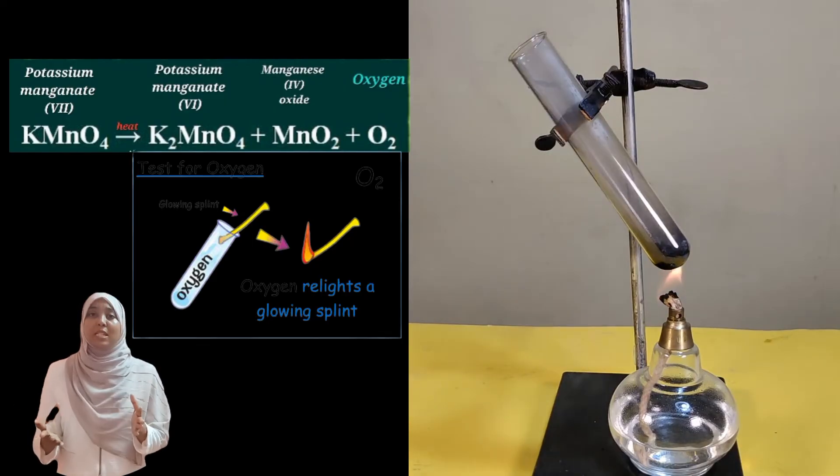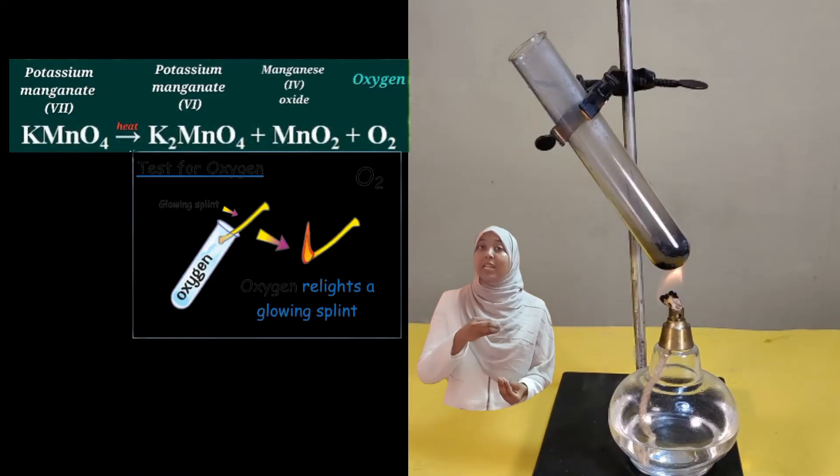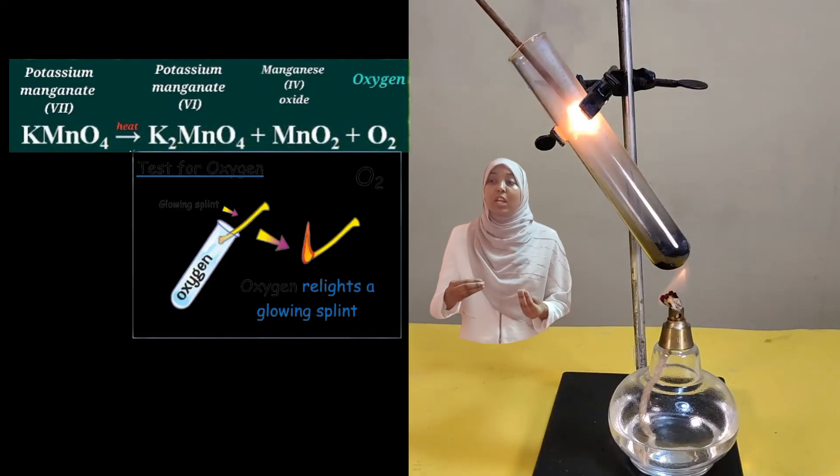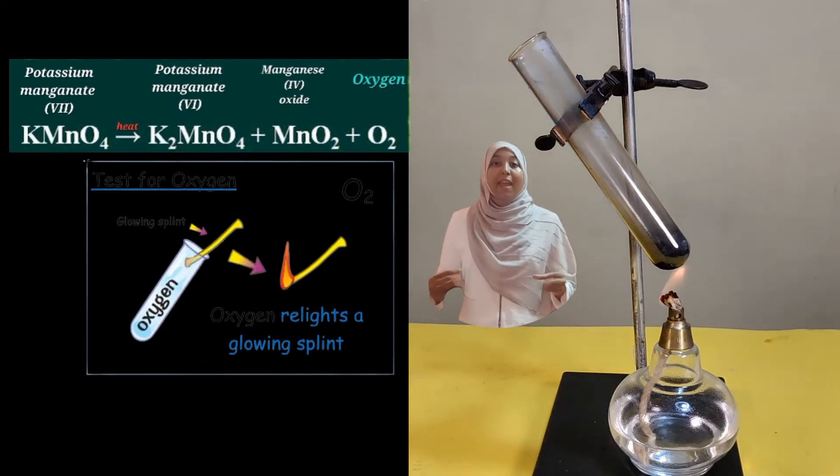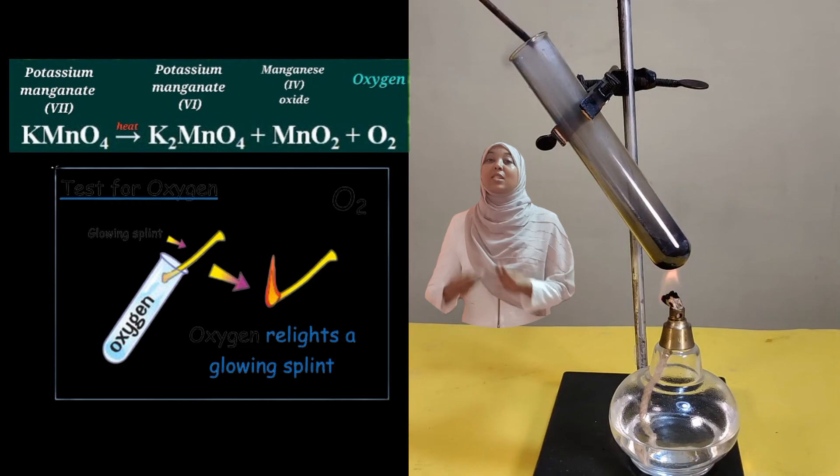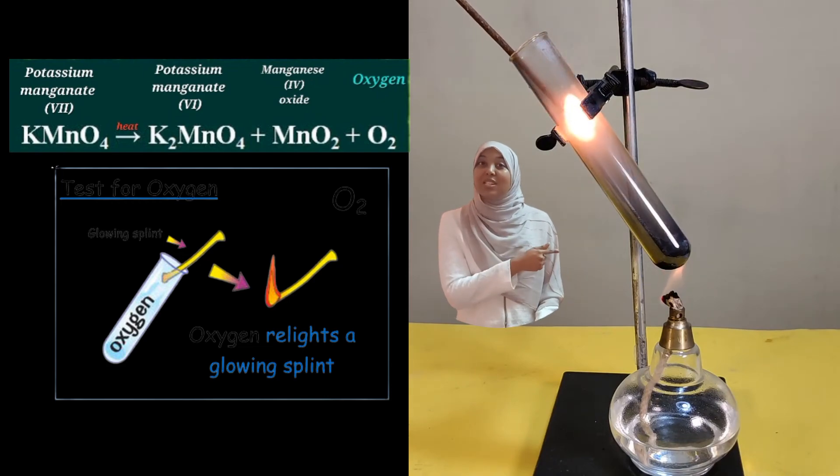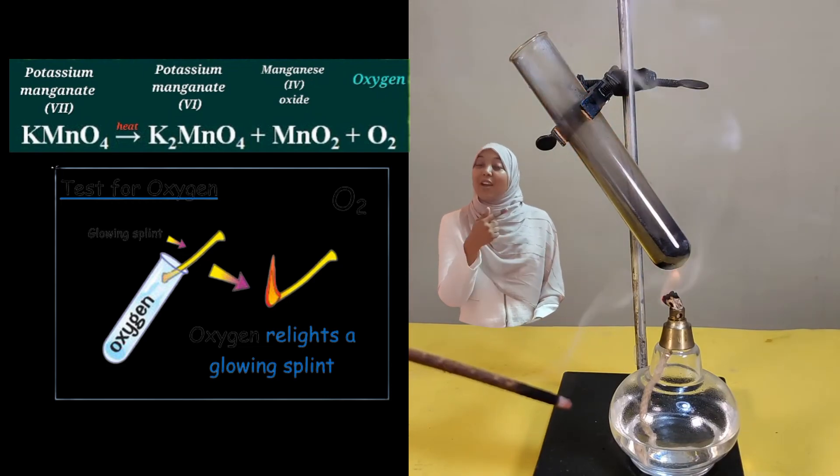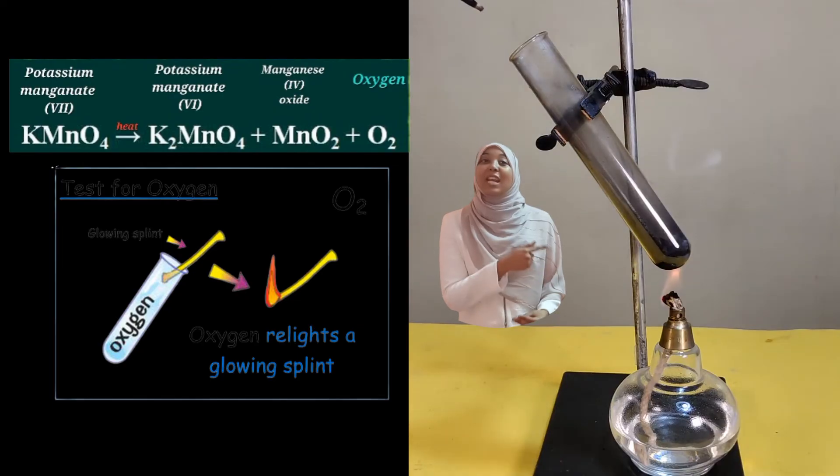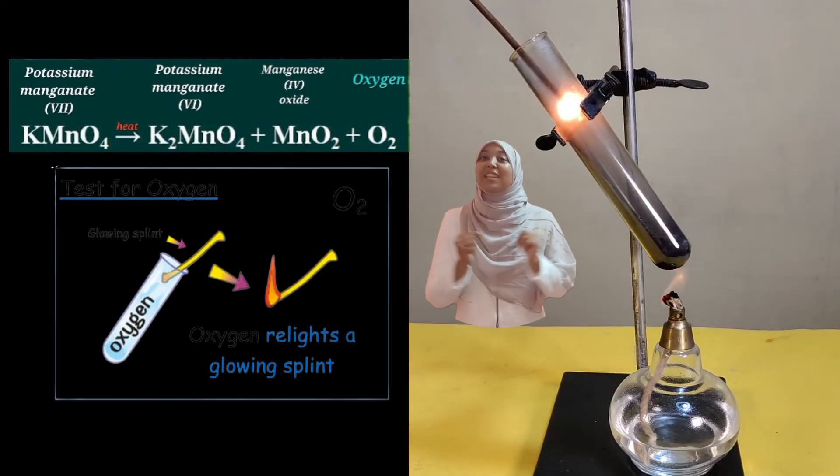If you introduce a glowing splint in a container having oxygen, it's going to relight. If it relights, then that is the positive test for oxygen, such as what is happening in this case. We are having oxygen that has been produced, and that is the reason why it relights the glowing splint.